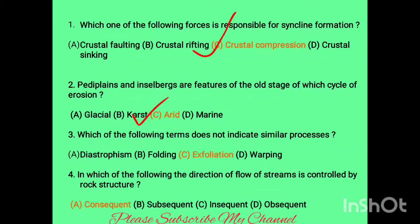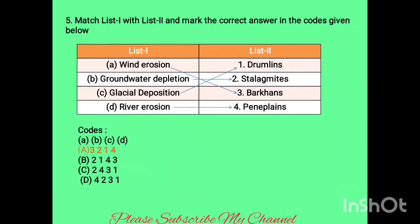Question four: which of the following streams has its direction of flow controlled by rock structure? Options are consequent stream, subsequent stream, insequent stream, and obsequent stream. The answer is consequent stream — consequent stream follows the direction that is controlled by rock structure.